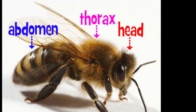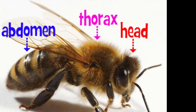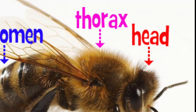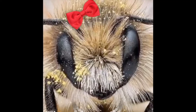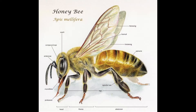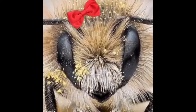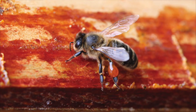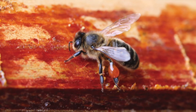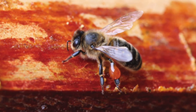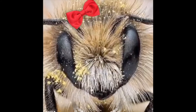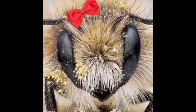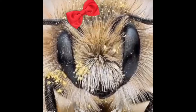The thorax of the honeybee contains our legs and our wings. We have six legs. We use our legs to move all around, and we also use them to carry pollen and propolis, which is a resin from the trees. The hair on our legs helps us to collect pollen.